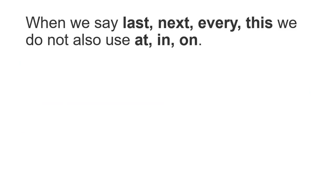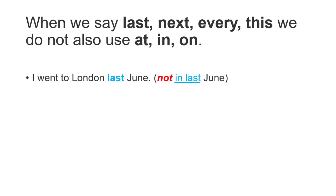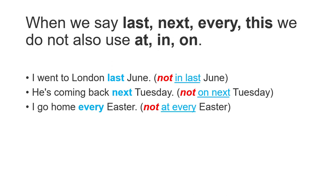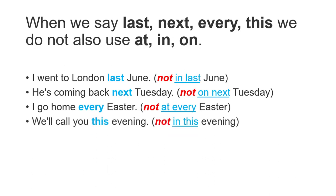When we say last, next, every, or this, we do not also use at, in, or on. For example: I went to London last June — not 'in last June.' He is coming back next Tuesday — not 'on next Tuesday.' I go home every Easter — not 'at every Easter.' We'll call you this evening — not 'in this evening.' Thank you.